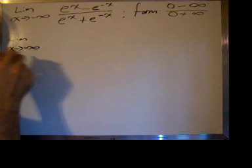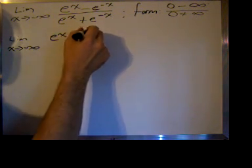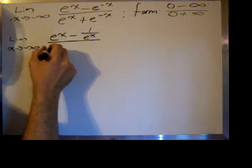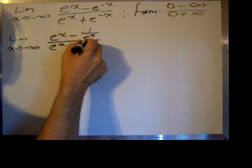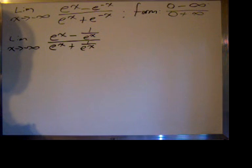So we have the limit as x goes to negative infinity of e^x minus, and e^(-x) is 1 over e^x, divided by e^x plus 1 over e^x. So it's obvious we have a compound fraction.